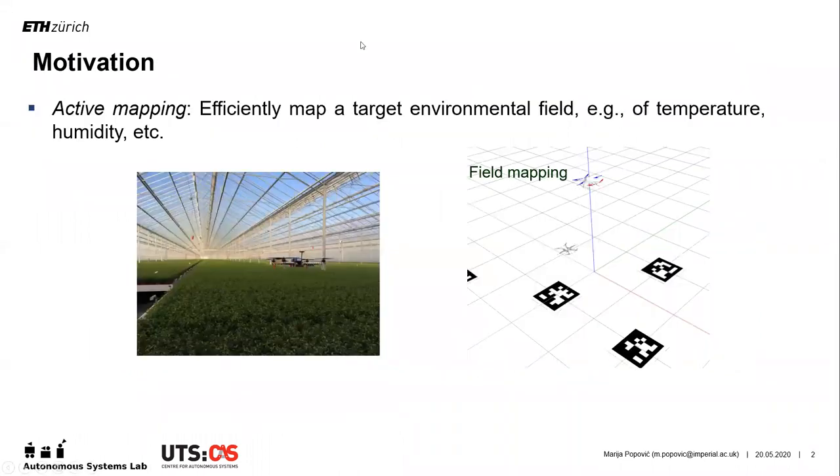Consider this UAV navigating in a greenhouse to monitor a target parameter, such as temperature or humidity, using measurements taken by an onboard sensor. We study the problem of active mapping, where the aim is to efficiently recover the environmental field.